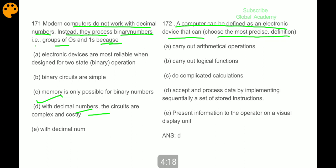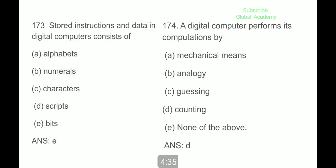A computer can be defined as an electronic device that can choose the most precise definition: accept and process data by implementing sequentially a set of stored instructions. Stored instructions and data in a digital computer consist of bits.